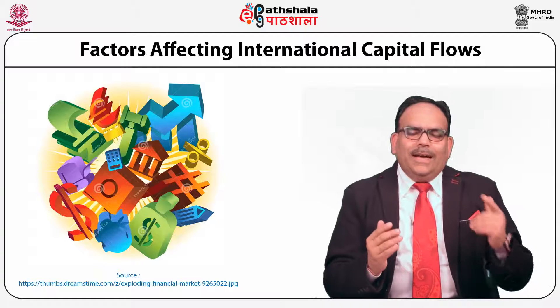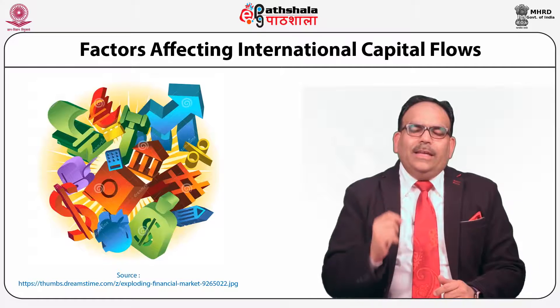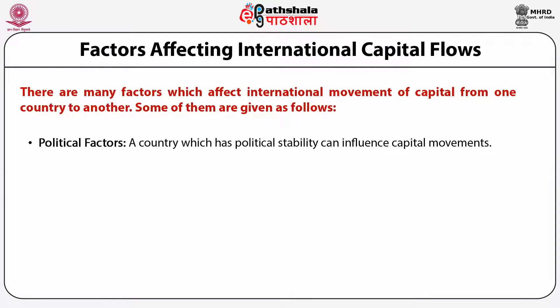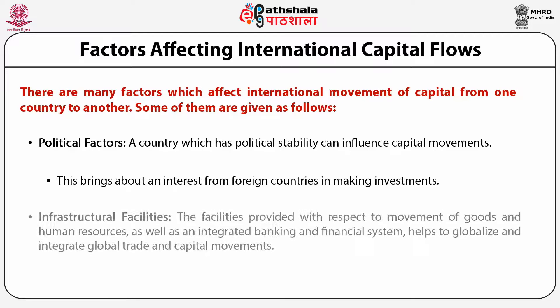A controlled government with strict policies and a closed-door approach cannot encourage other countries to bring in capital. The government policies towards tariffs, foreign exchange control, taxation and foreign collaboration should be carefully prepared if a country is keen on international trade. Political factors: A country which has political stability can influence capital movements. Political stability creates an environment of freedom of occupation, security of life and reasonable opportunity for making profits, bringing about interest from foreign countries in making investments. Infrastructural Facilities: The facilities provided with respect to movement of goods and human resources as well as an integrated banking and financial system help to globalize and integrate global trade and capital.